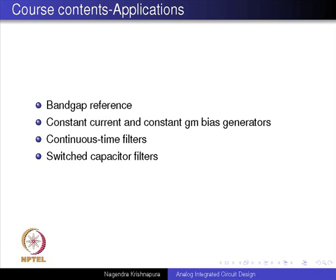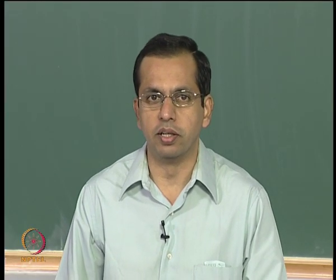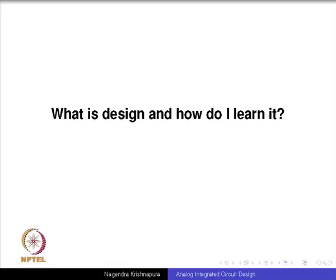We will also look at application circuits such as the band gap reference — a circuit that maintains a constant voltage regardless of temperature — and constant Gm bias generation. We will look at continuous time filters and switched capacitor filters. That covers what is going to be in this course, and all of it will be covered in great detail in the rest of the classes.